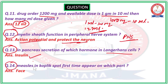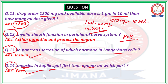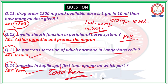Question number 14: Measles and Koplik spots. In measles, Koplik spots develop. The question asked where Koplik spots first appear on the body. The right answer is the face — they start from the face. The distribution of the rash in measles is centrifugal, meaning it spreads from the center toward the periphery.